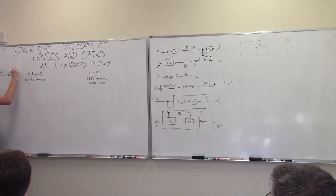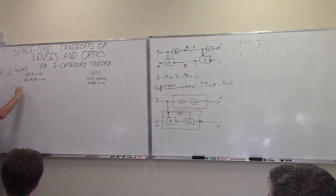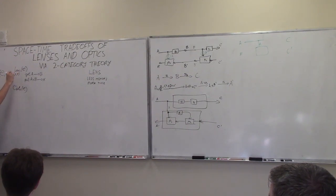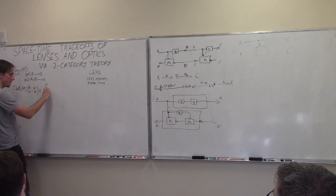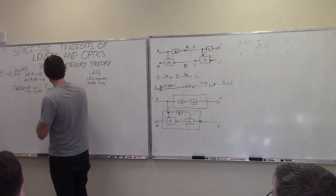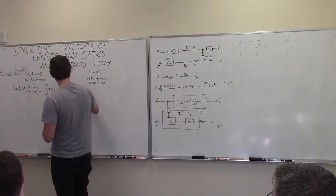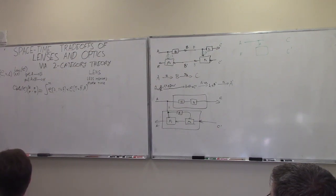Both lenses and optics have objects that are pairs — A and A-prime — so the objects are the same in both categories. The hom-space between two optics is given by a formula involving a coend. We're going to have a map from A into M times B, and a map from M times B-prime into A-prime, where M is quantified over by the coend. What this coend really means is the following: if a lens has a certain shape, an optic has this shape.